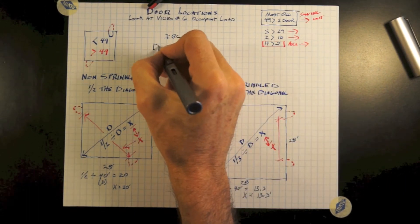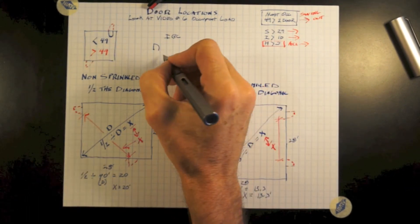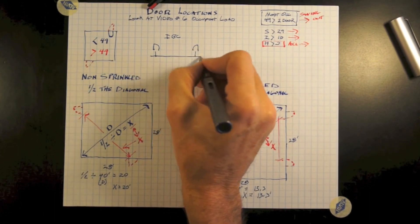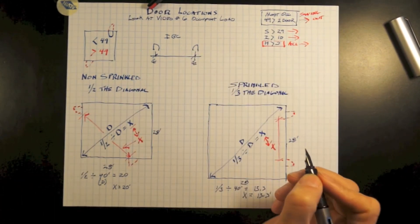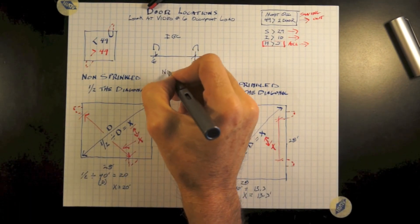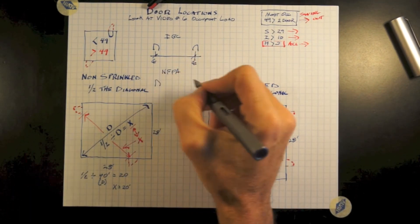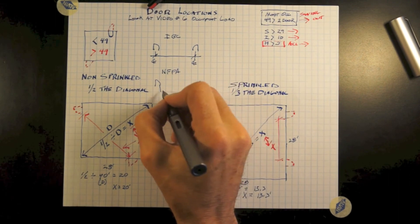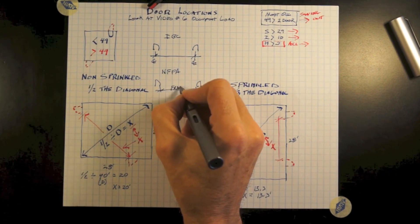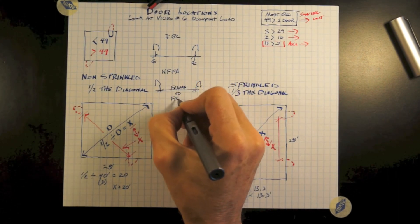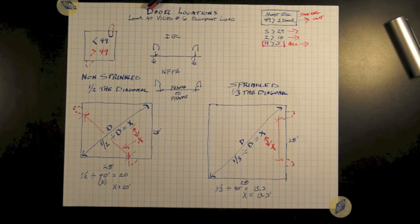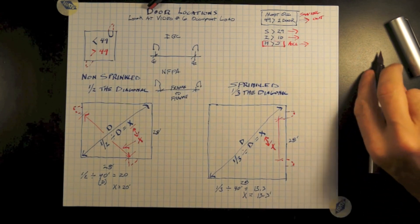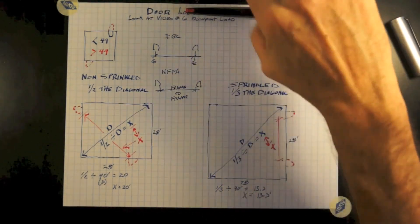One point of note here, IBC considers the definition or the distance between doors is measured from center line of door to center line of door. NFPA measures from door frame to door frame, whichever is closest. So if you're needing to comply with both building codes, you will need to apply the most stringent of the two, which is most likely NFPA.